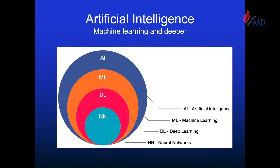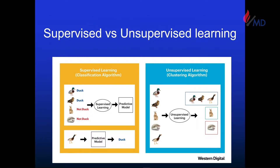How many people are trained in machine learning or AI? Raise your hand. The two key components, in simplistic terms, are supervised learning and unsupervised learning. What you're trying to do is create an algorithm that will take the input data and give you a desired output.